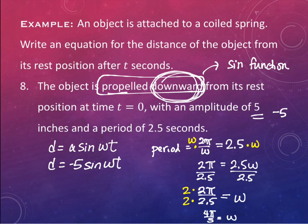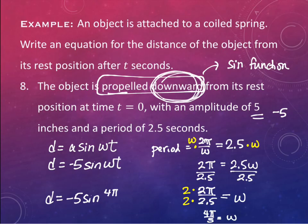So the final equation is d = -5·sin(4π/5 · t). We want no decimals mixed with fractions in our notation.